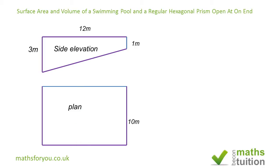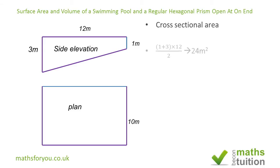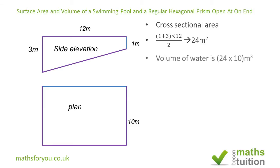Because this is a trapezium — or trapezoid in some parts of the world — we add the parallel sides, in this case 1 plus 3, divide by 2, and then multiply by 12. That gives us a cross-sectional area of 24 meters squared.